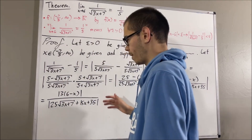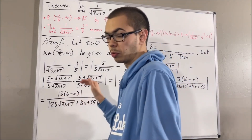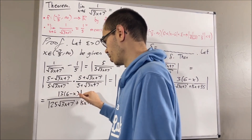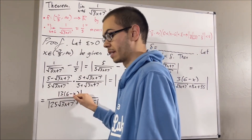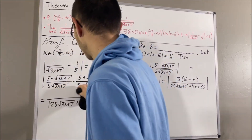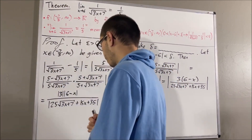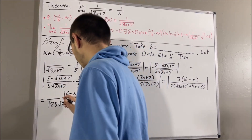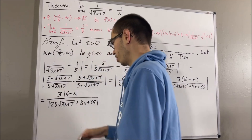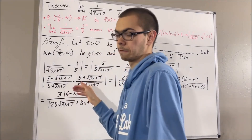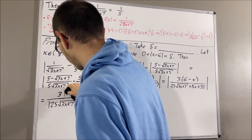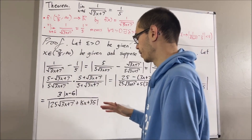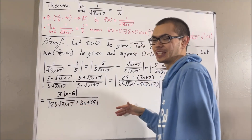Another property of absolute values tells us that the absolute value of a product equals the product of absolute values. So this expression equals the absolute value of 3 times the absolute value of 6 minus x. Further, the absolute value of 3 is just 3, and the absolute value of 6 minus x equals the absolute value of x minus 6. Now you might be thinking: how do we deal with the mess we have in the denominator?